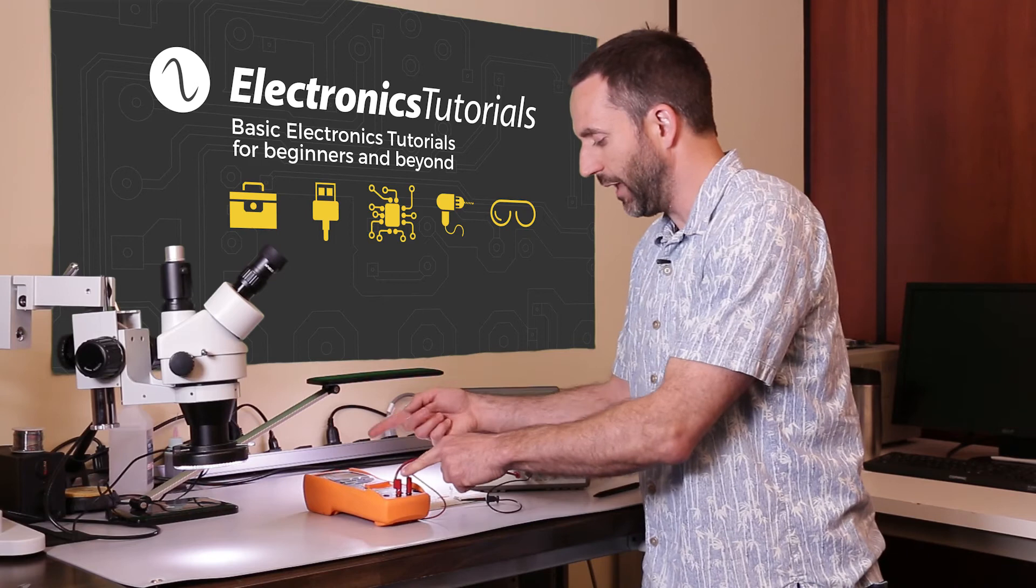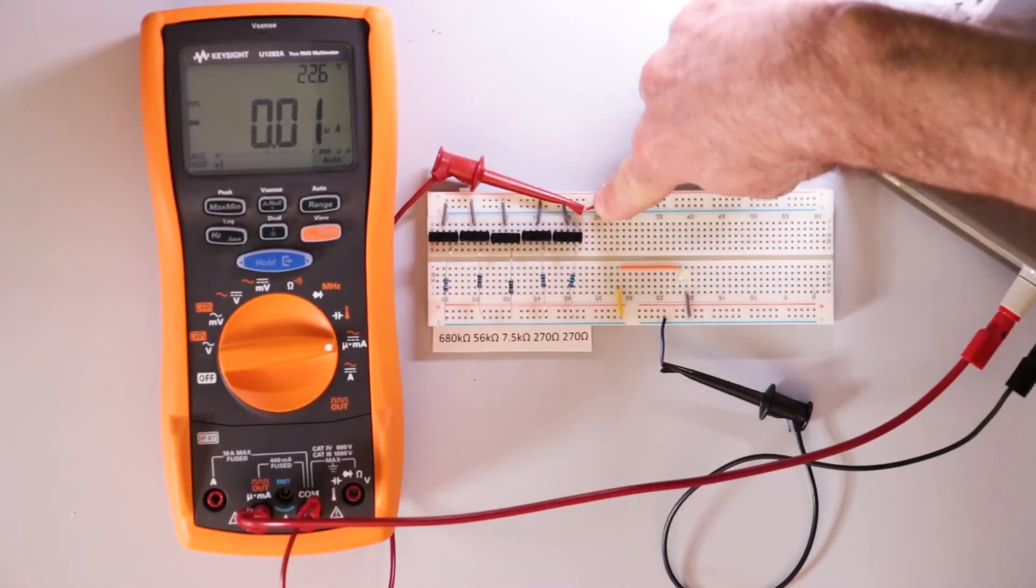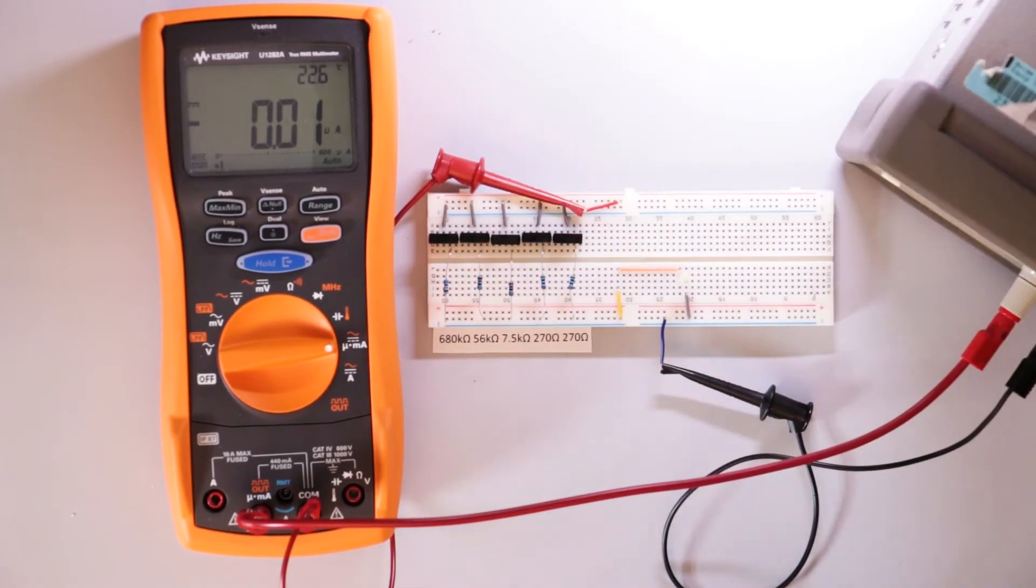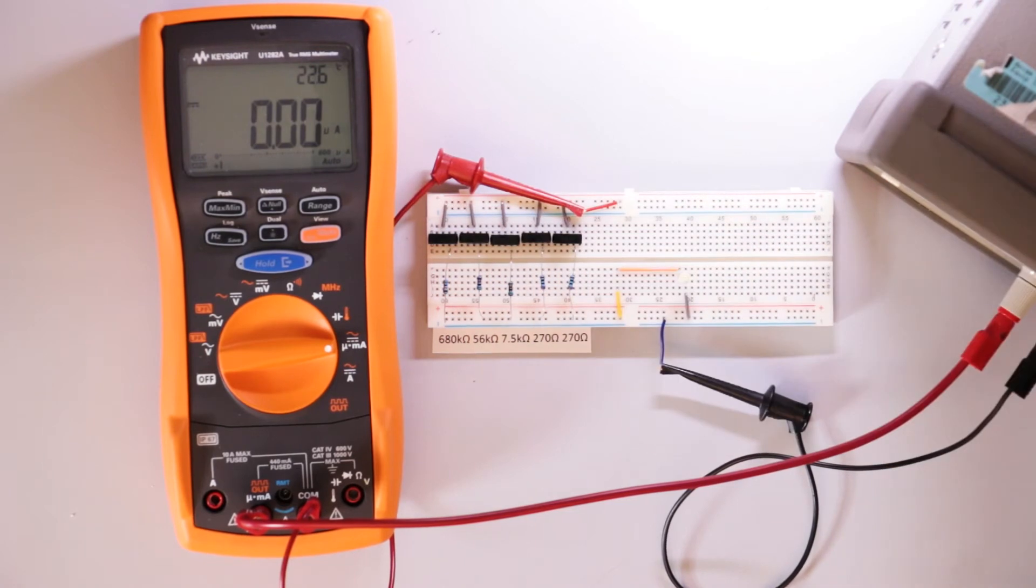And then the current comes out into the top of the breadboard here, which feeds the resistors. The current comes through the resistors, up over here, through the LED, and then back to the power supply. So you have your current loop.